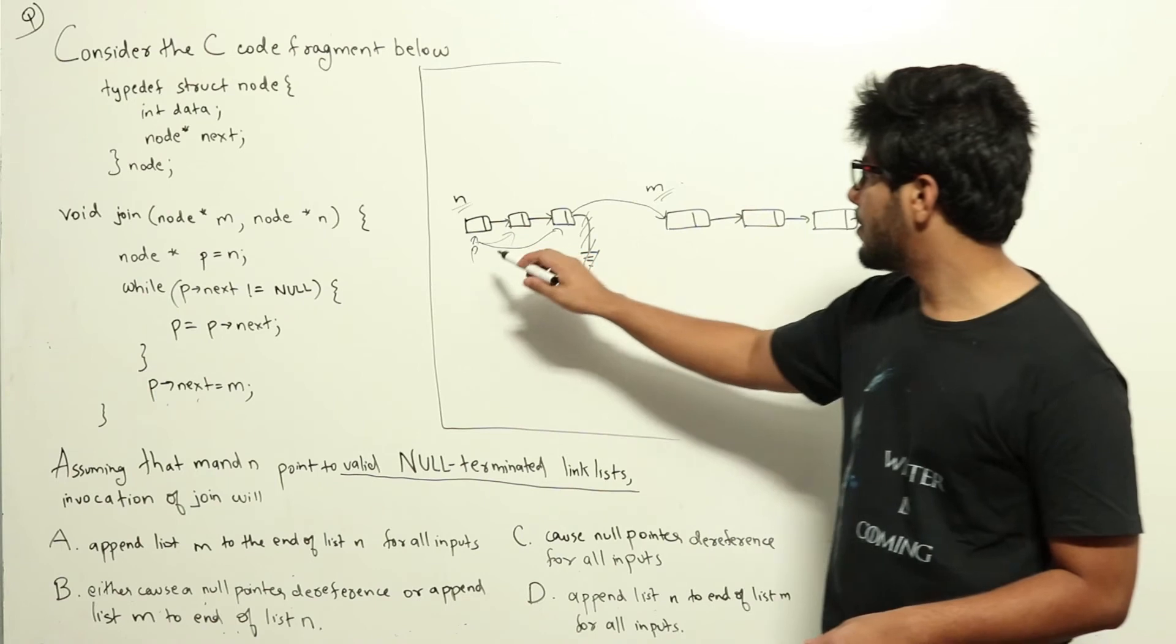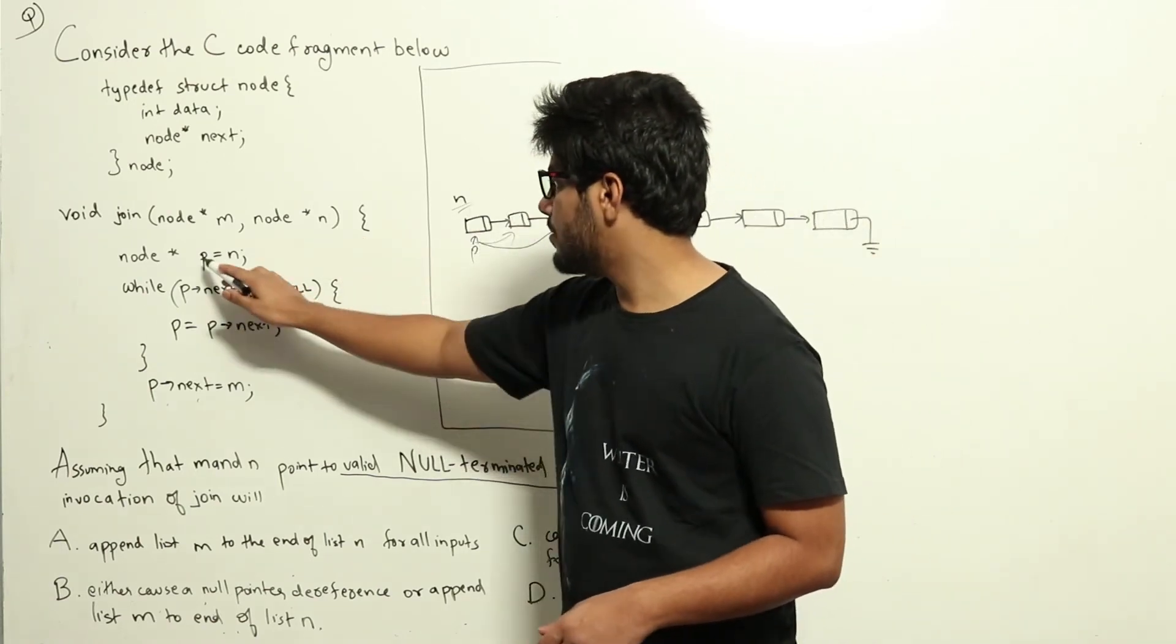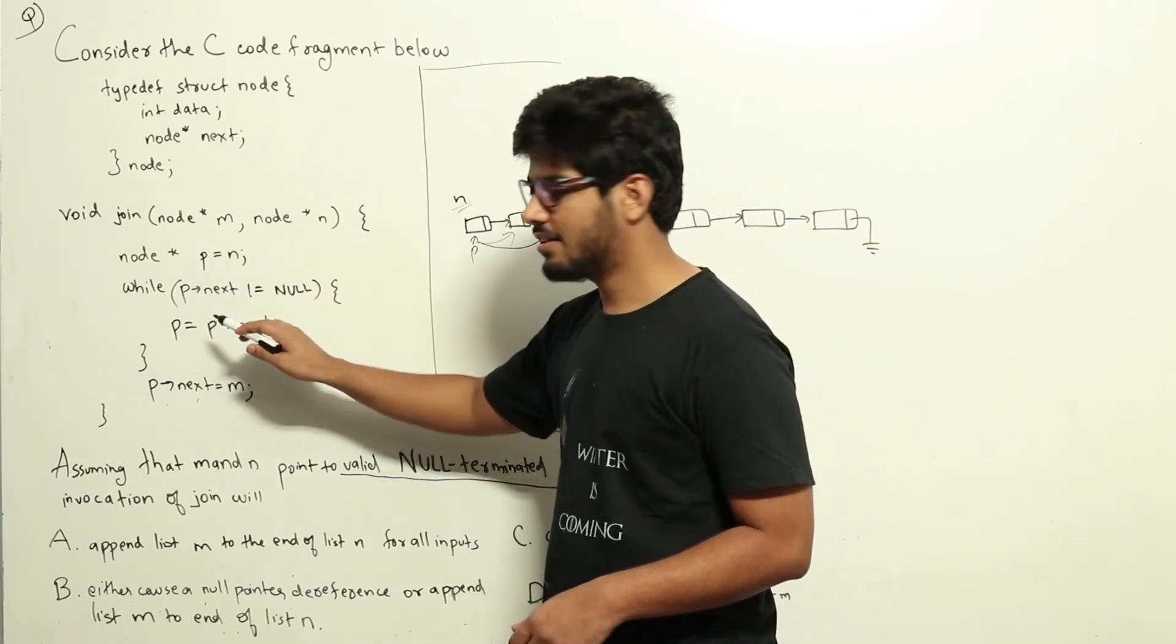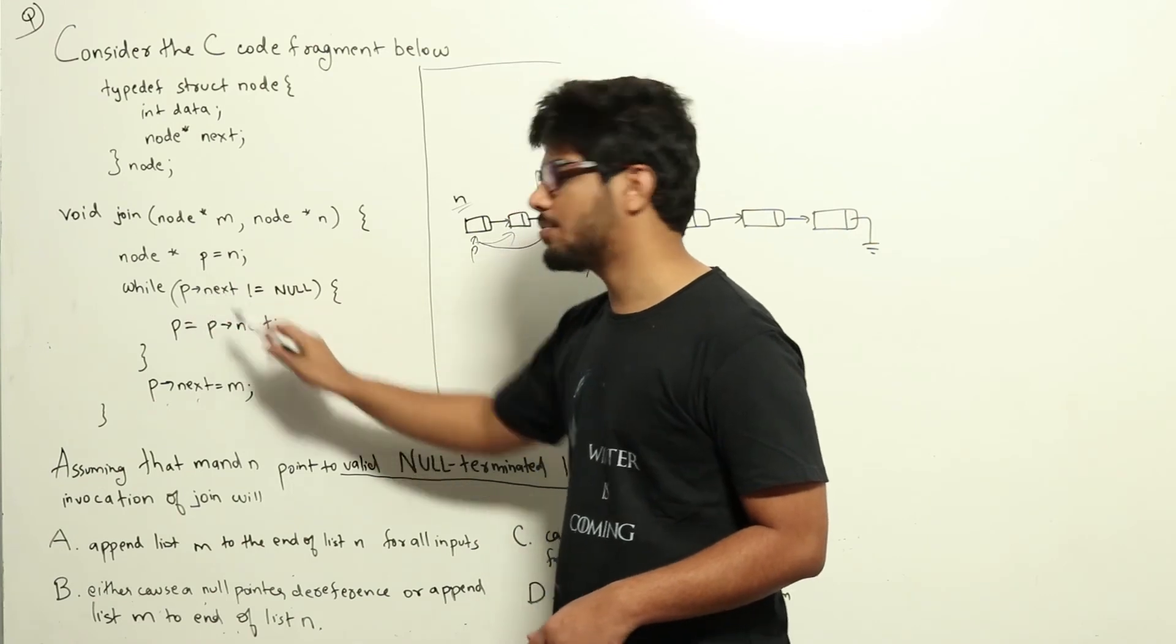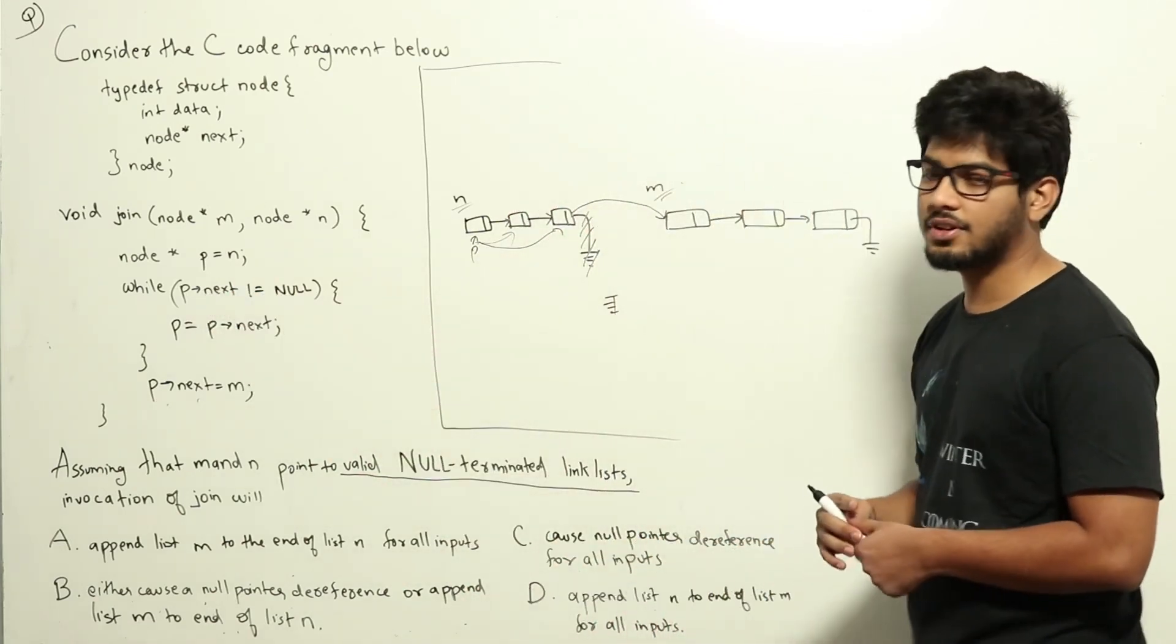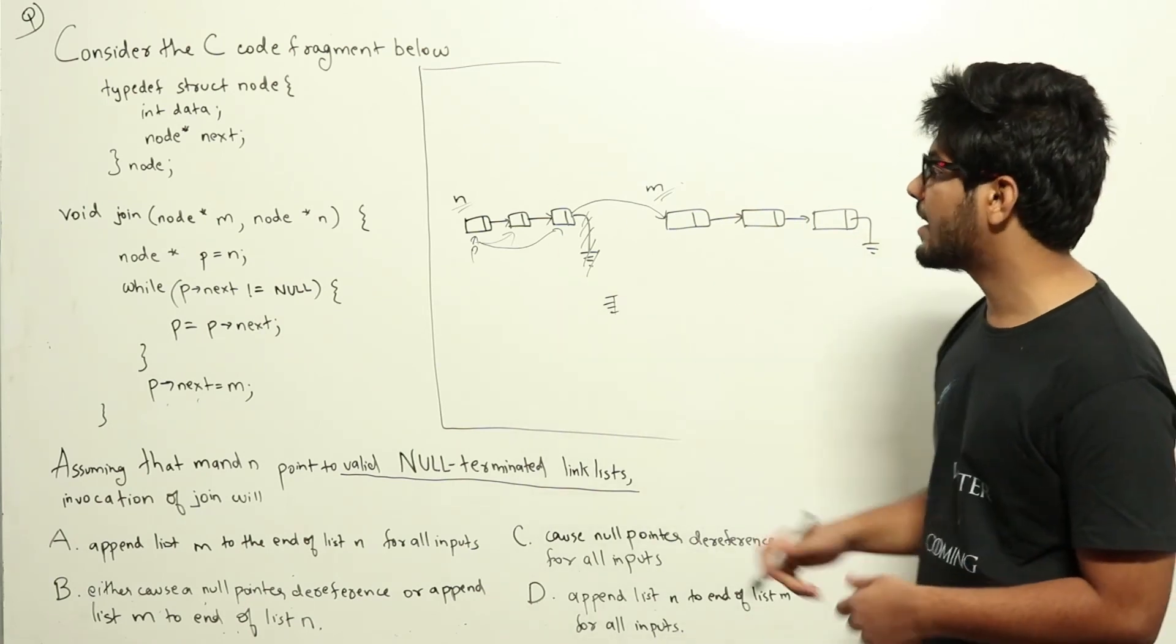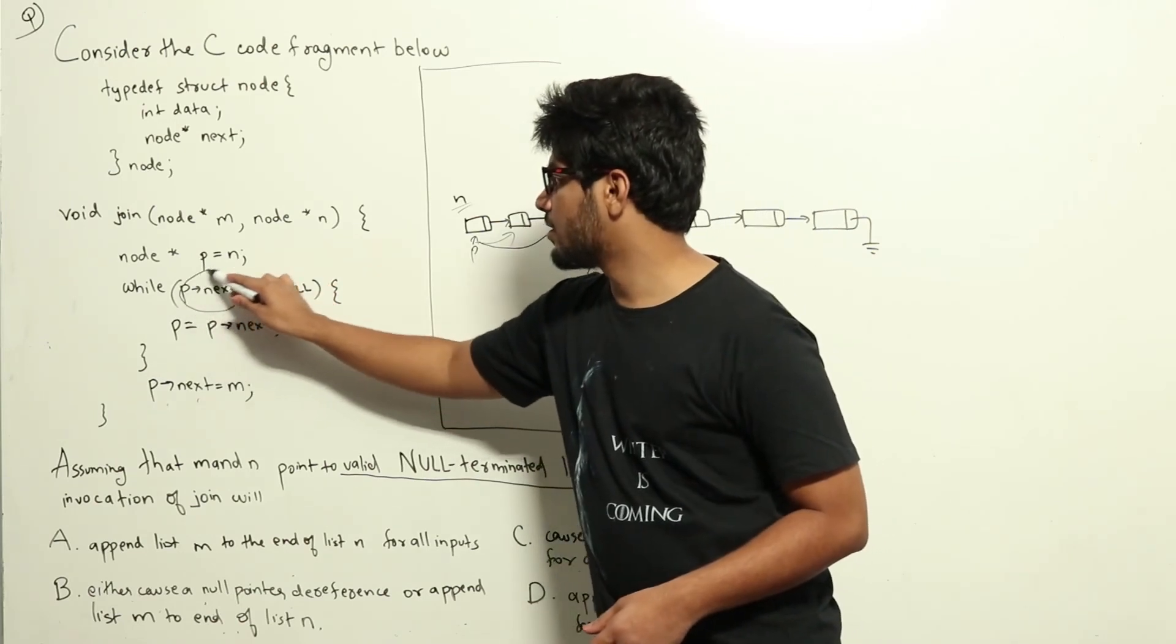So, if N is empty, the first thing what we are doing is we will be assigning P to N. Now, P is null and in the condition we are trying to reference P next, which is null hyphen next. Now, that will cause a null pointer dereference since P is null. We have to do a null check before we execute this particular code.